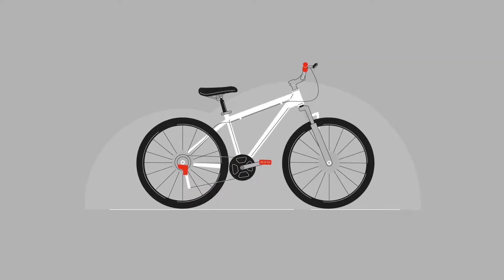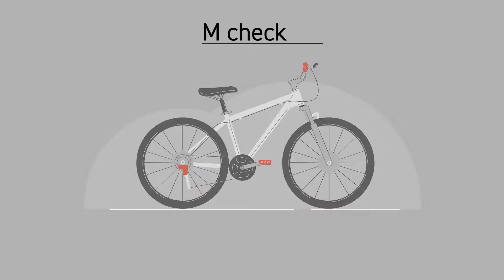If you ride a bike, keeping it well-maintained is important to keep you and others safe. A simple M check only takes a few minutes. Following the shape of the letter M means you won't miss anything out.